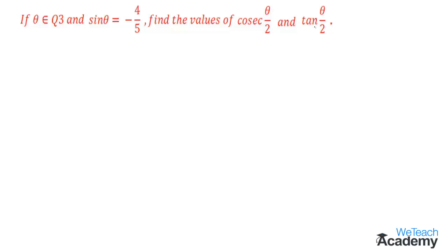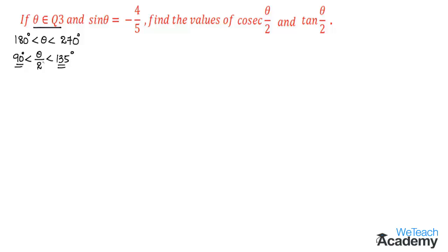To find the values, we know that theta belongs to quadrant 3, that is 180 degrees is less than theta less than 270 degrees. Dividing all sides by 2, we get 90 degrees less than theta by 2 less than 135 degrees. Hence theta by 2 lies between 90 degrees and 135 degrees, meaning theta by 2 belongs to quadrant 2.